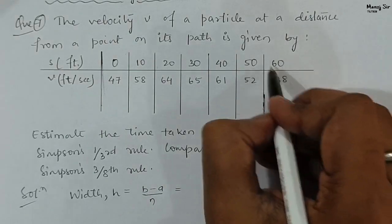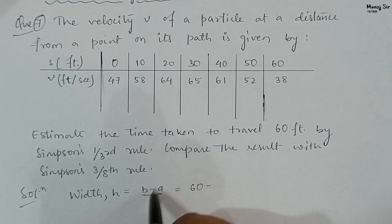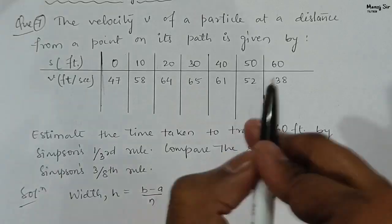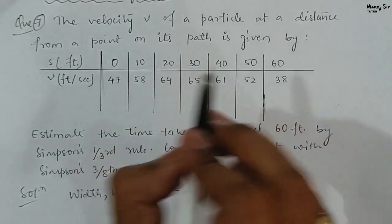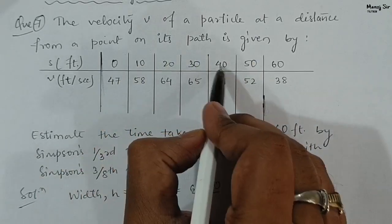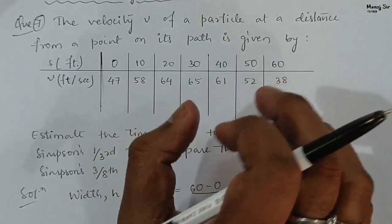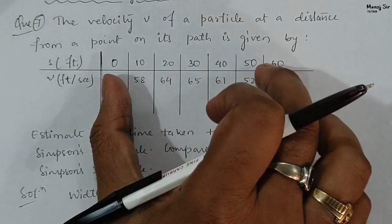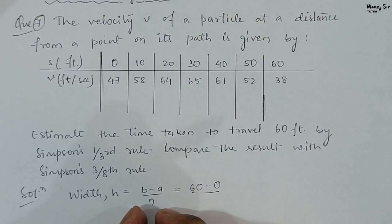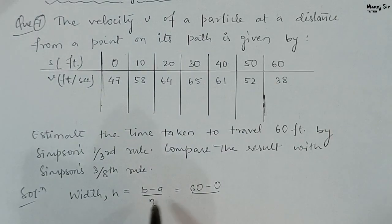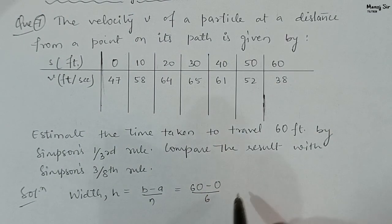The upper limit b is 60, the lower limit a is 0, and n is the number of steps. To find n, we count the number of elements in the problem: 1, 2, 3, 4, 5, 6, 7 — there are 7 elements. Number of elements minus 1 gives number of steps n, so n = 7 - 1 = 6. Therefore h = 60 / 6 = 10.